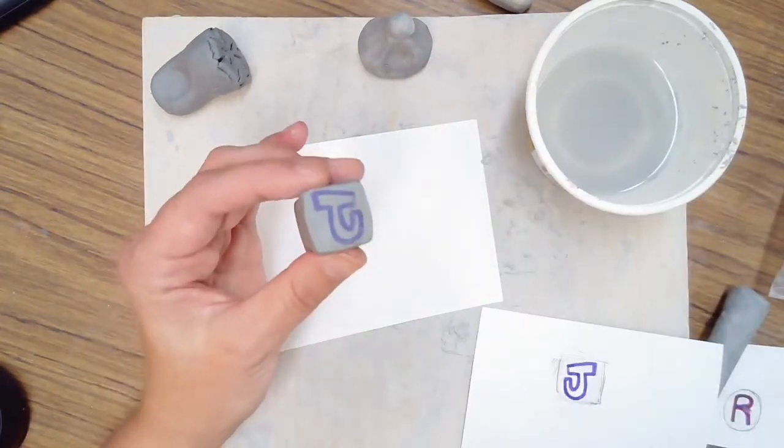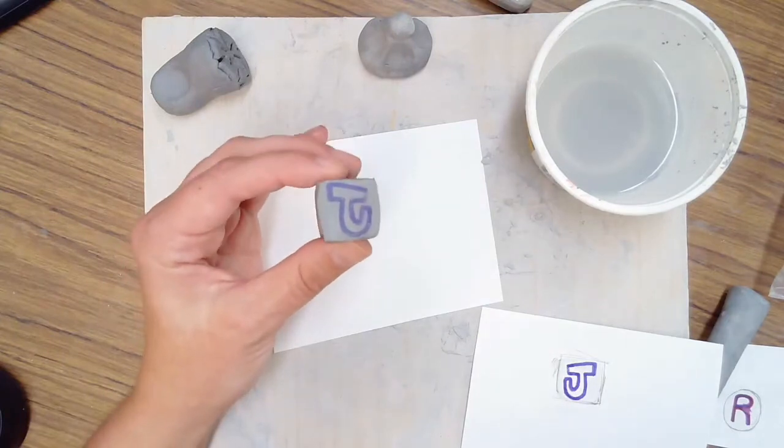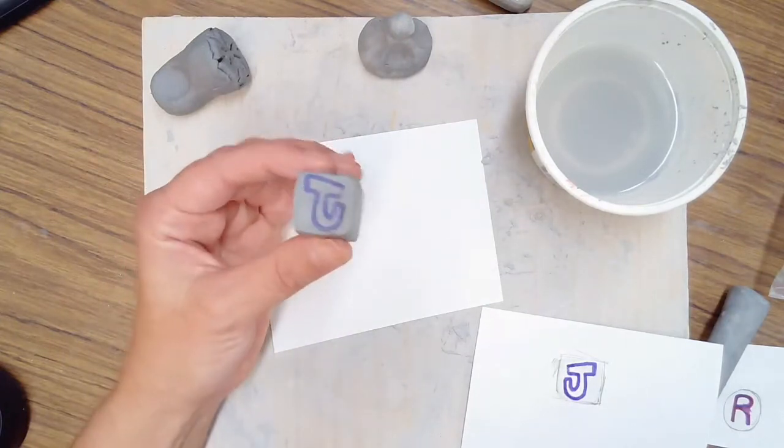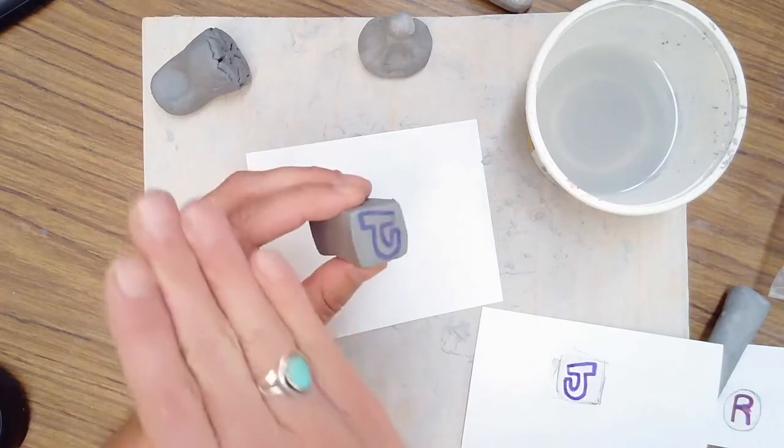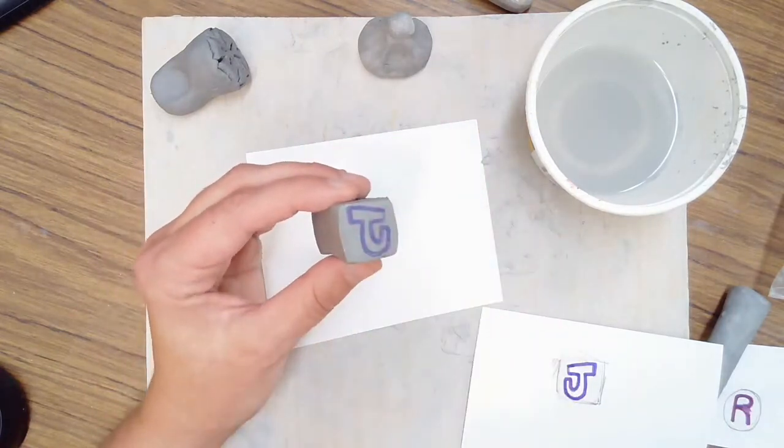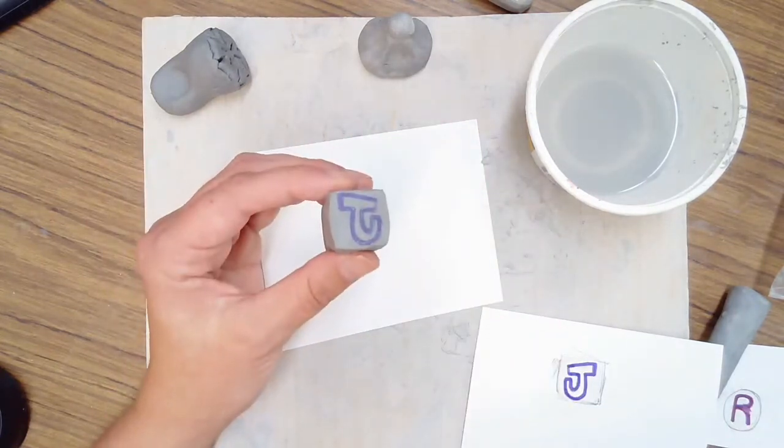Now if it messes up or doesn't look very good, it's just water-based marker, you can just wipe it off or cut it and then reshape that and try it again. But I'm going to let this dry a little bit, and then my next step would be to carve it.